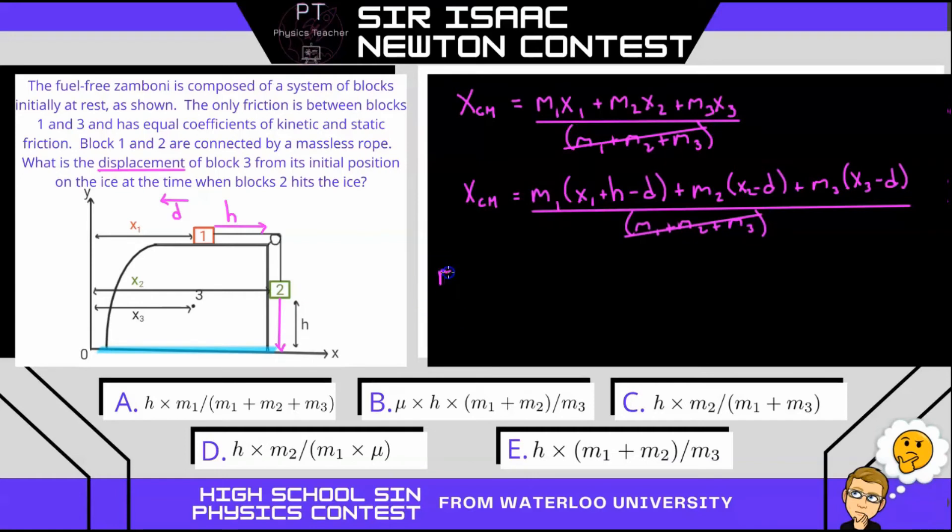And we are left with M1 X1. So I'm going to write this equation on the left plus M2 X2 plus M3 X3 will equal this equation here on the right, M1 times X1 plus H minus D plus M2 times X2 minus D plus M3 times X3 minus D. Now if we were to expand these, you'll notice M1 X1 will cancel with this M1 X1. Here M2 X2 will cancel with this M2 X2 if you subtract them from both sides. And finally M3 X3 will cancel with this M3 X3.